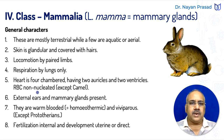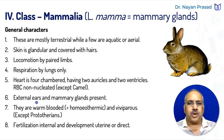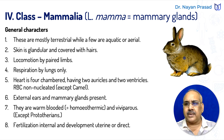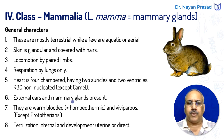RBC is non-nucleated, though certain exceptions are there — in camel, we find nucleated RBC. One of the most important characteristic features of all mammals is the presence of external ears and mammary glands. Here in this image, we are seeing a good diagram of a rabbit. Rabbits have large movable pinna, the external ears. Presence of external ear is the most characteristic feature of mammals, and mammary glands are also found functional in female individuals.